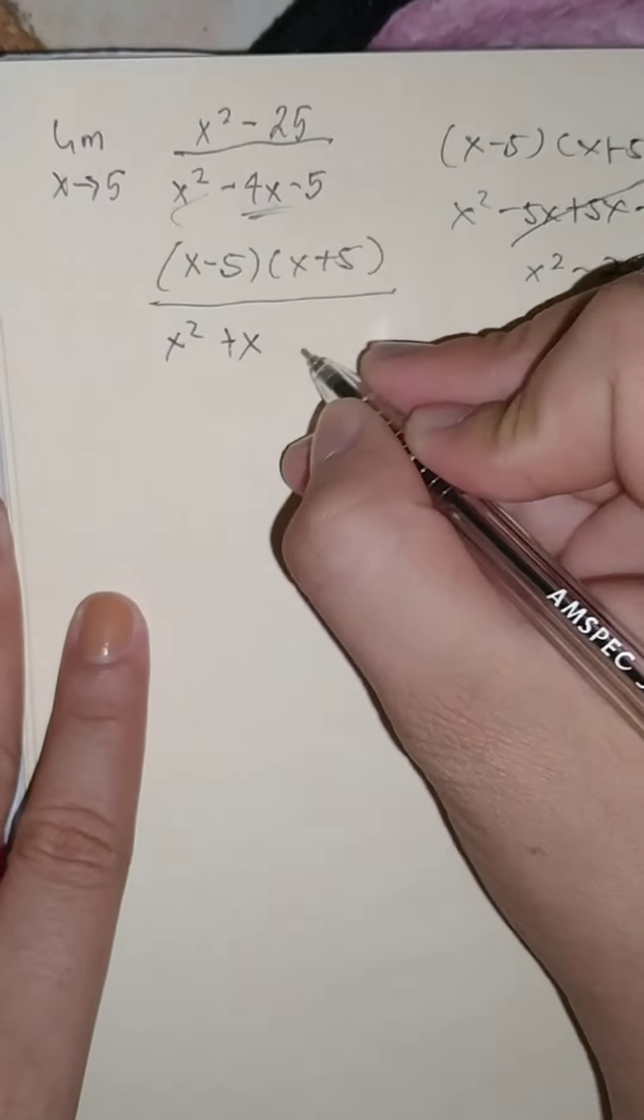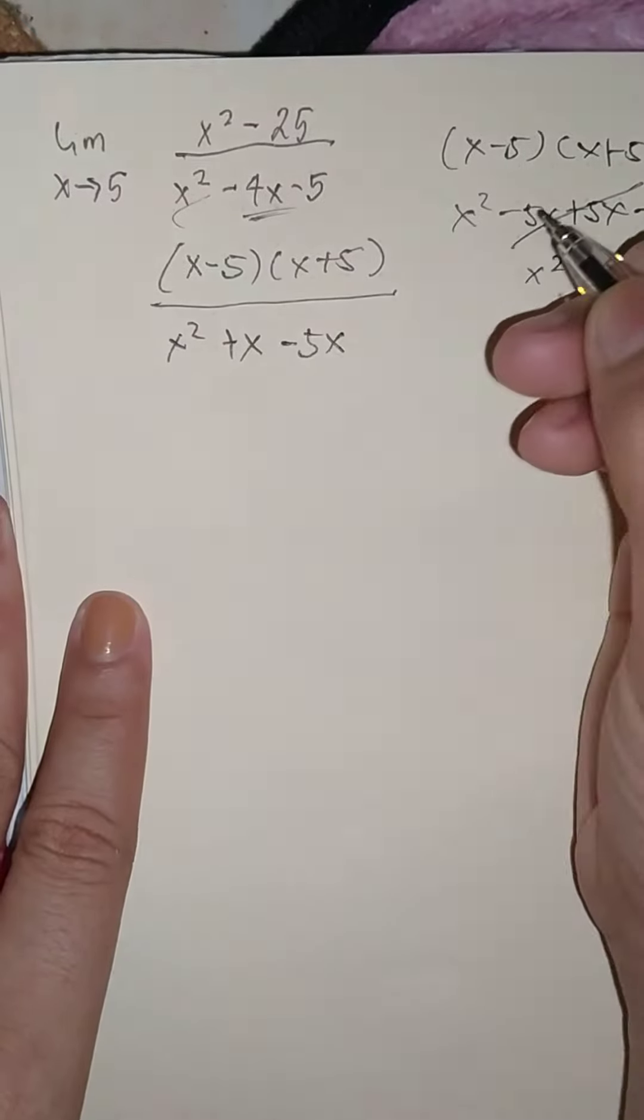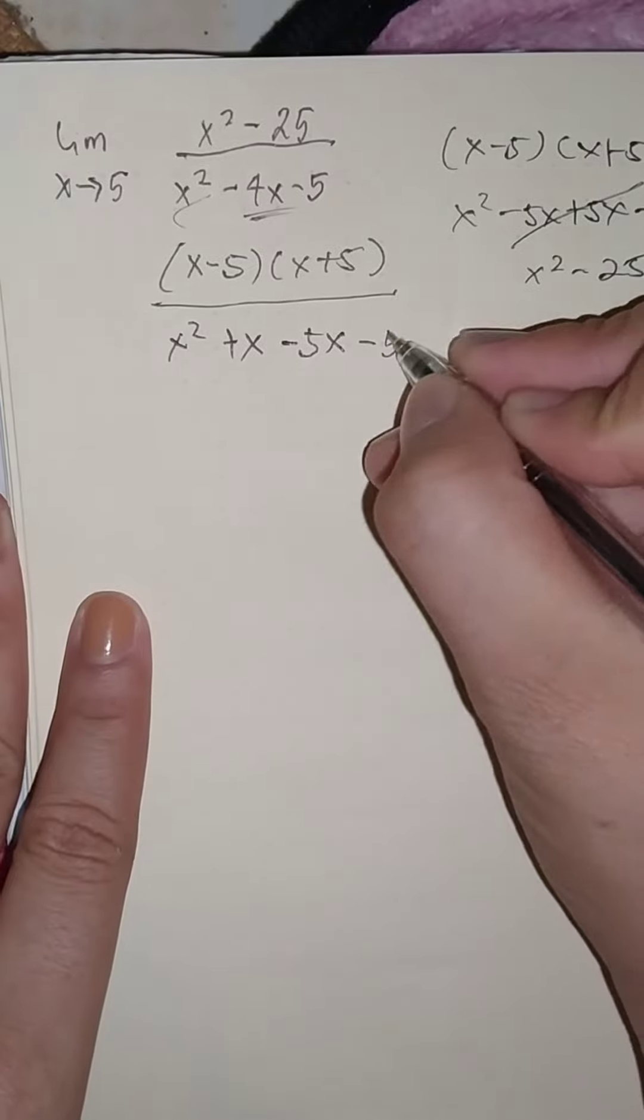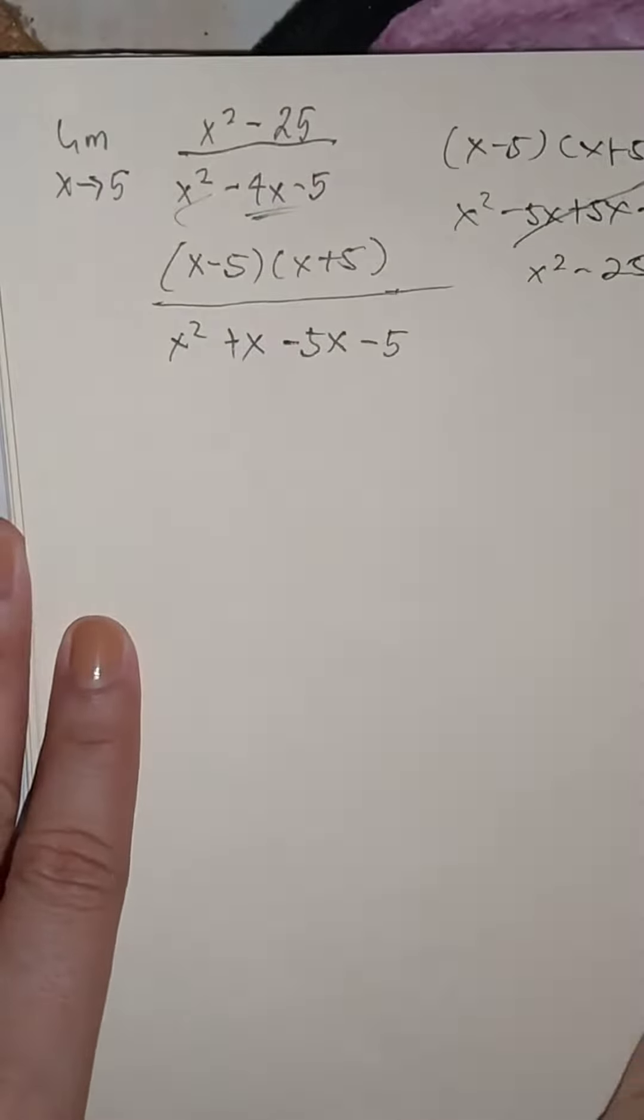So I'll try putting plus x minus 5x, right? It will arrive to 4 minus 5. Okay, so this one sums up to this one.